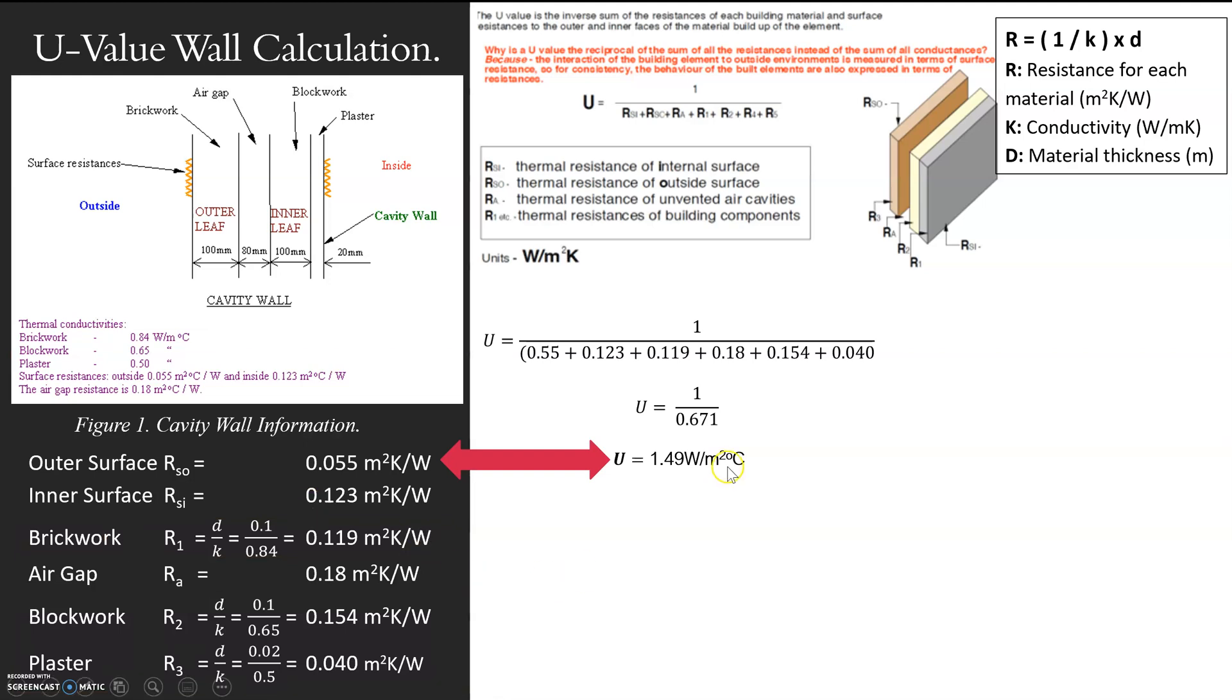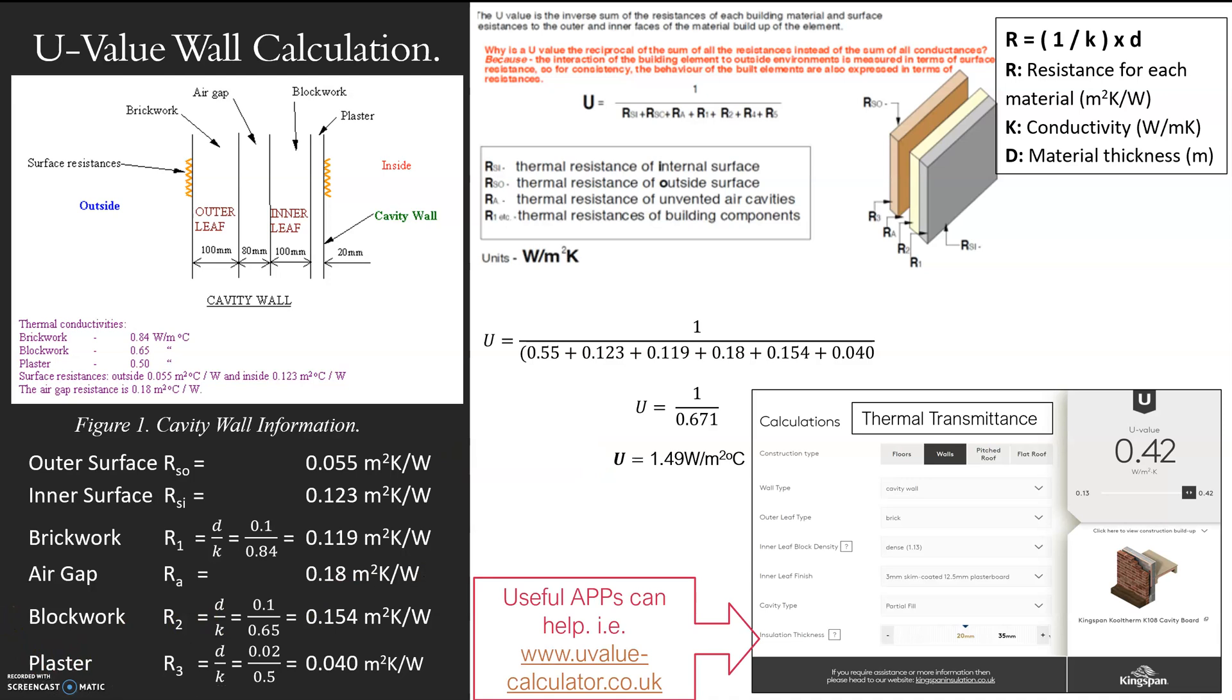So then I move on and now I've got all the resistances of all the materials. I can add them all together and I can put them into my lovely U-value formula here. So I have my U-value, 1.49 watts per metre squared. I've put degrees Celsius because that's what I'm measuring in on this wall.